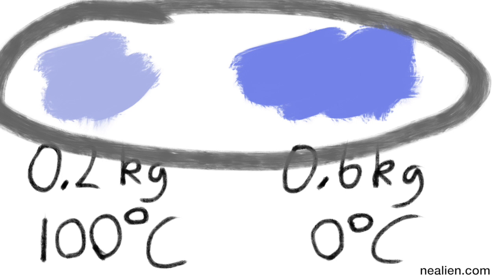At this point, all of the 0.2 kilograms of steam has turned into liquid water at 100 degrees Celsius, and the 0.6 kilograms of ice has turned into liquid water at zero degrees Celsius. The amount of energy released from the steam turning into liquid water is quite a bit more than the energy it took to melt the ice, so we have excess energy still.